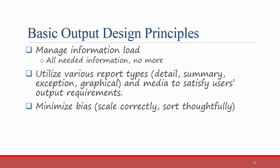Let's start with sorting. There are many different ways to sort tables. If you have a list of the 50 states and the tax revenue that they bring in, you could sort by the total tax revenue, you could sort by geographic region, or you could sort alphabetically by state name. The way that you sort could introduce potential bias into the way that the user interprets the information that is output from the system.